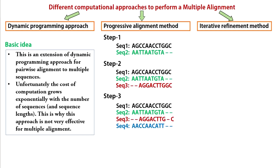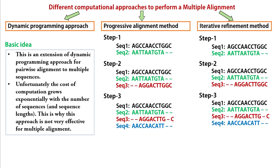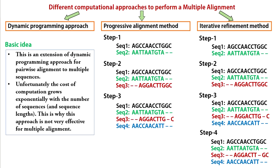The third method is the iterative refinement algorithm, which works similarly to the progressive alignment method. But in this case, once a new sequence is added to the alignment, the initially aligned sequences are repeatedly realigned in order to obtain the best alignment. For example, see the alignment refinement of sequence 3 after sequence 4 is added to the alignment. So, let us do something by hand.